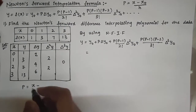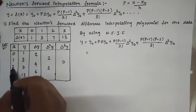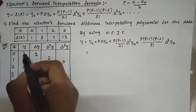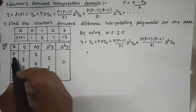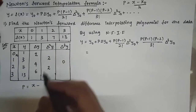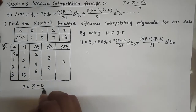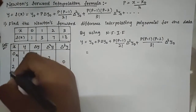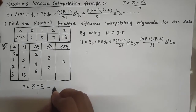Here x₀, x₁, x₂, x₃ are the x values and y₀, y₁, y₂, y₃ are the corresponding y values. The x₀ value is 0, and h, the difference between x values, is 1. So p = (x − 0)/1 = x.